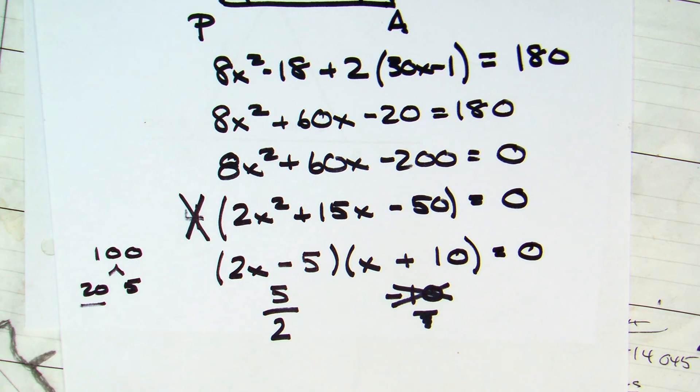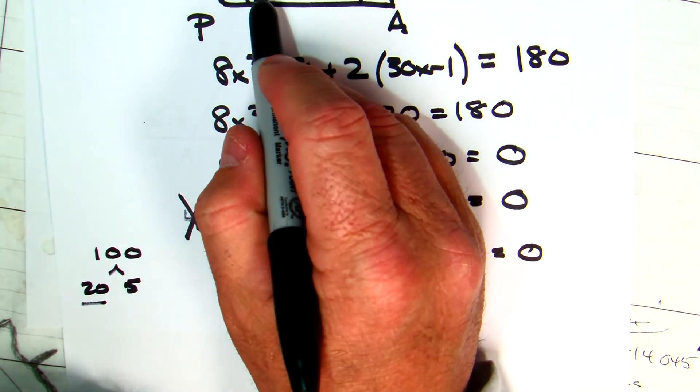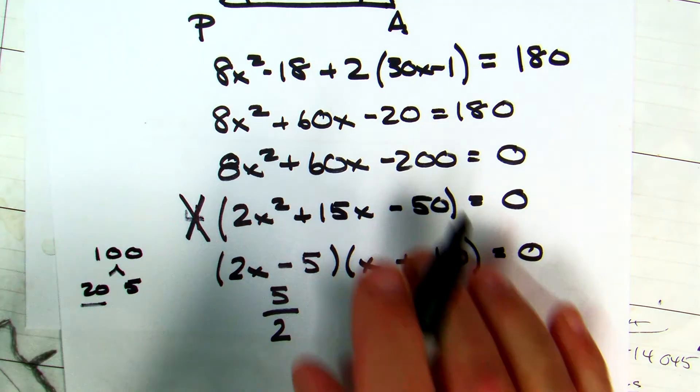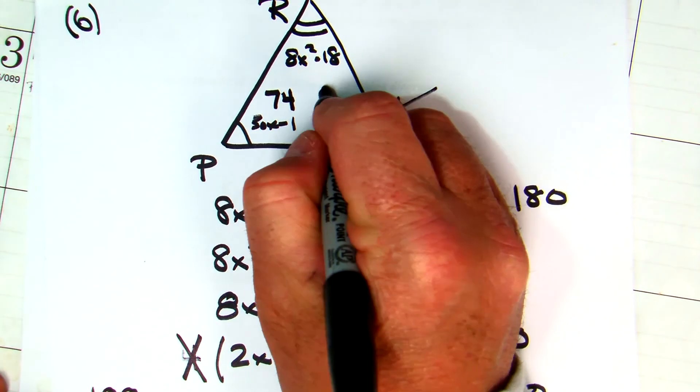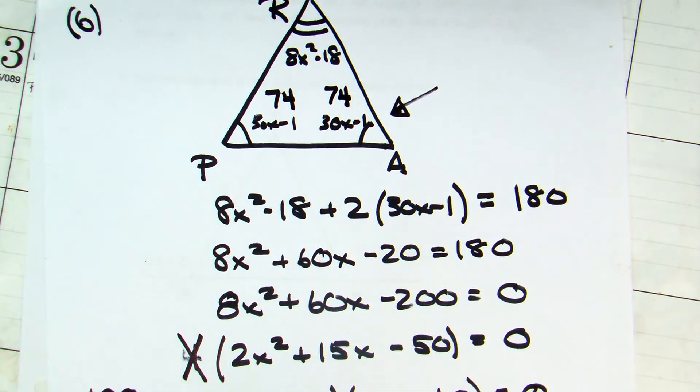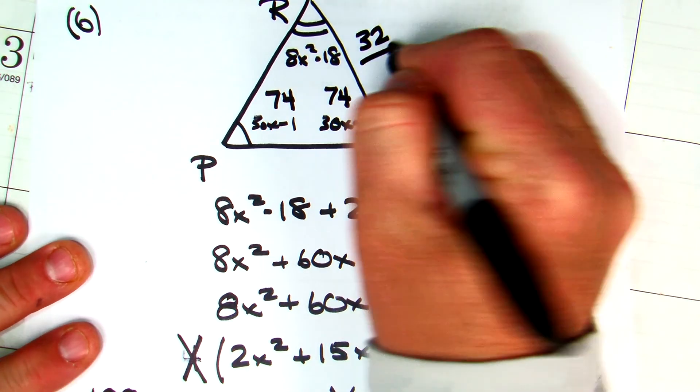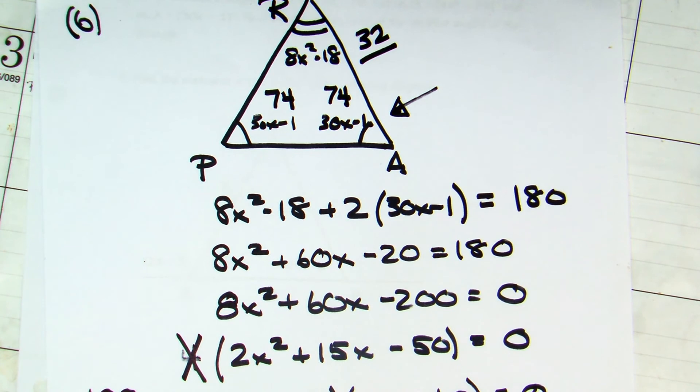To find the angle measures, I would then go back and plug that in. 5 halves times 30 is 75. 75 minus 1 is 74. Which means the other base angle would be 74. 74 and 74 is 148. Subtract that from 180, you get 32. Or plug in the 2.5 into that one and check your work.